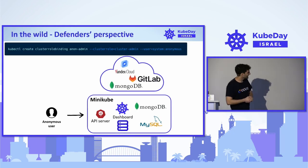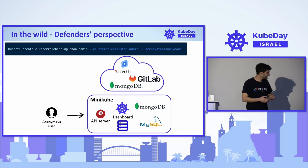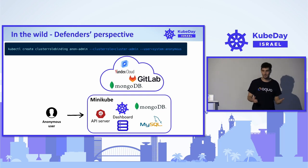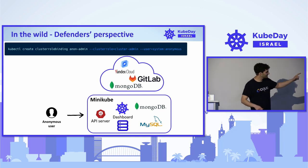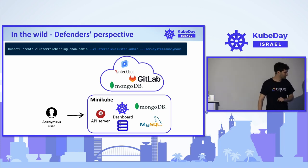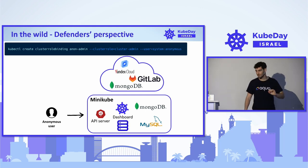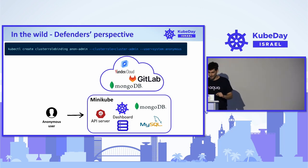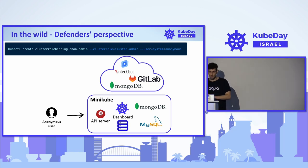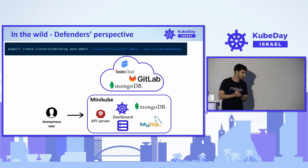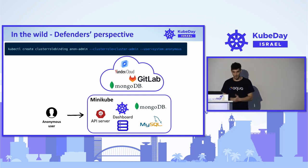One example was a Minikube — just one node, mainly used for local testing. This Minikube had MySQL, a Kubernetes dashboard, and MongoDB. On its secrets, we found credentials to MongoDB, GitLab, and Yandex Cloud — all belonging to production systems. We effectively had access to databases, source code, Yandex Cloud credentials, and the entire software development lifecycle, which was compromised.